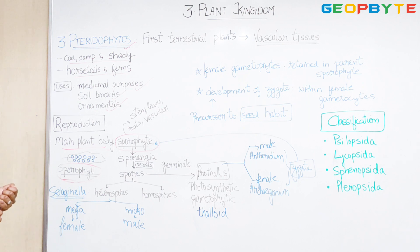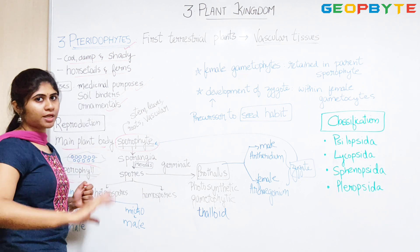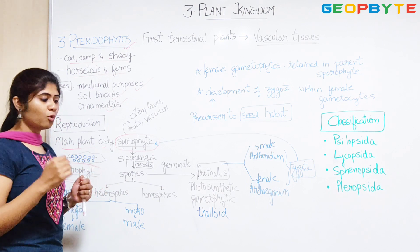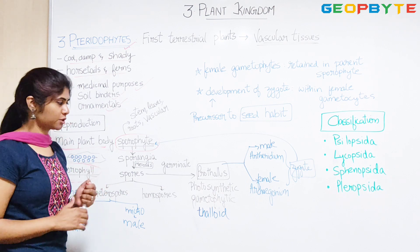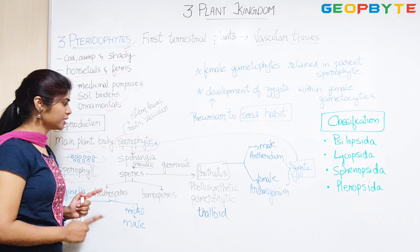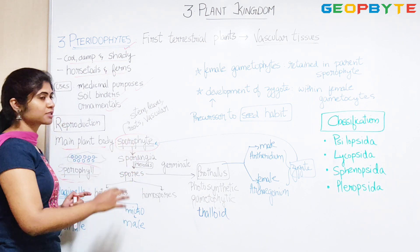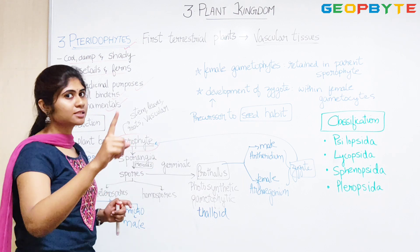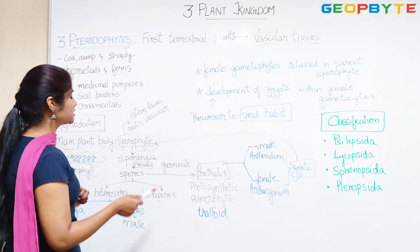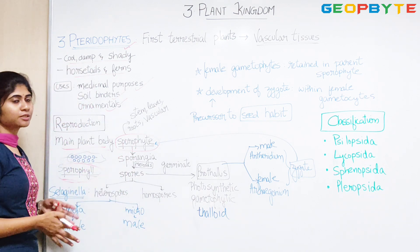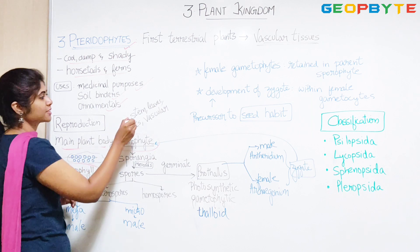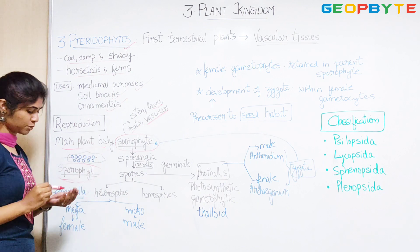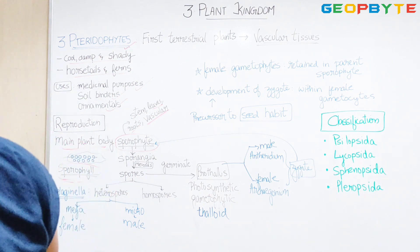One important thing to remember: in case of Bryophytes, both the gametophytic and sporophytic phases were more or less a thaloid structure. But in case of Pteridophytes, the sporophytic phase is well differentiated, whereas the gametophytic phase is thaloid. When we say the sporophyte is well differentiated, it means the sporophyte has stem, leaves, roots and true vascular tissues.